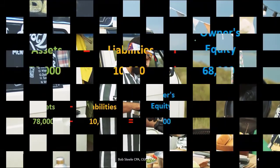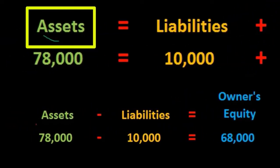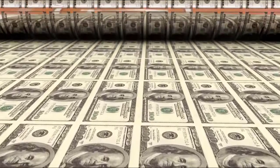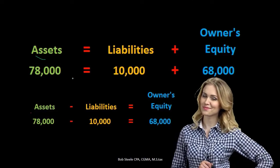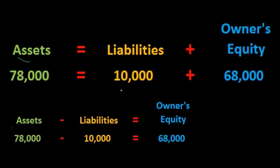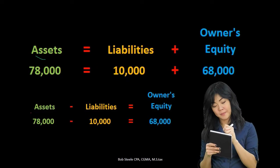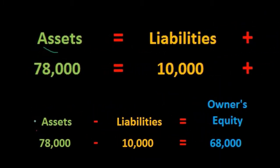The accounting equation is assets equal liabilities plus equity. Assets represent what is owned by the company, measured in total dollars. For example, $78,000 worth of assets equals who that $78,000 worth of stuff is owed to — either $10,000 owed to a third-party vendor, or the remaining $68,000 owed to the owner. We can also write this as assets minus liabilities equals equity.